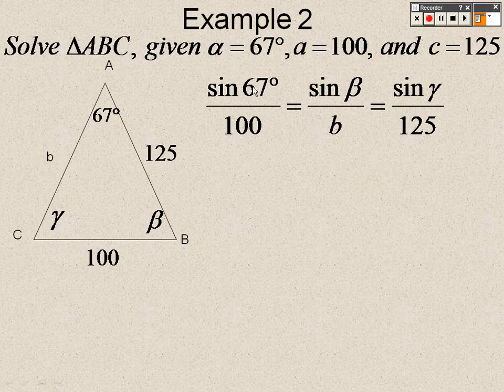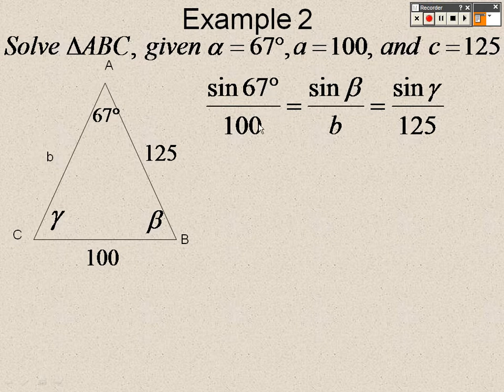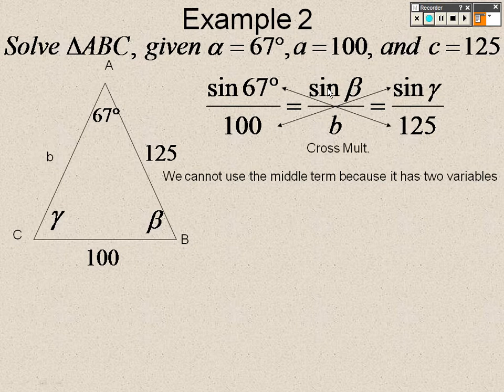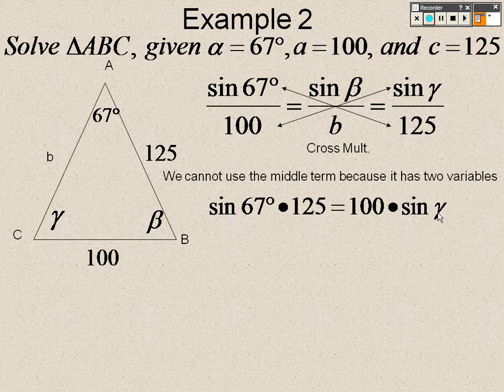So what I'm going to do first is, I'm going to cross-multiply the far two. Because there's only one letter to solve for. If I try to do this one right here, I have two letters, and it's not going to help. So I cross-multiply the far ones. And I get sine of 67 times 125 equals 100 times sine of some angle gamma.